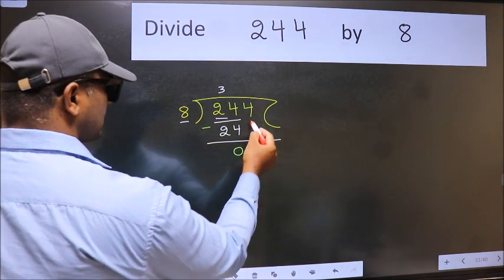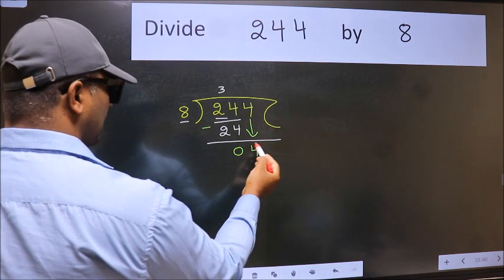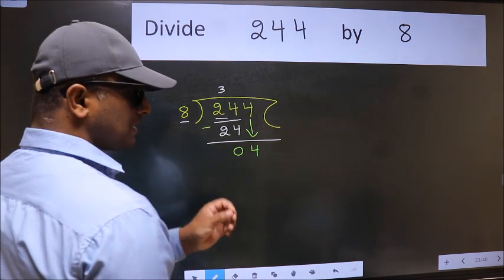After this, bring down the beside number. So 4 down. After this step, the mistake happens.